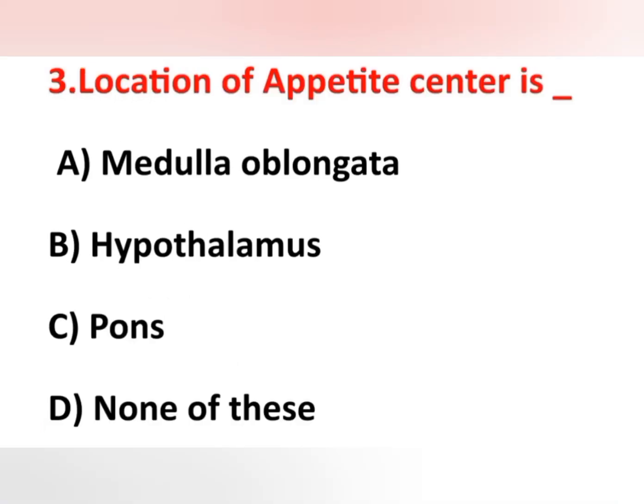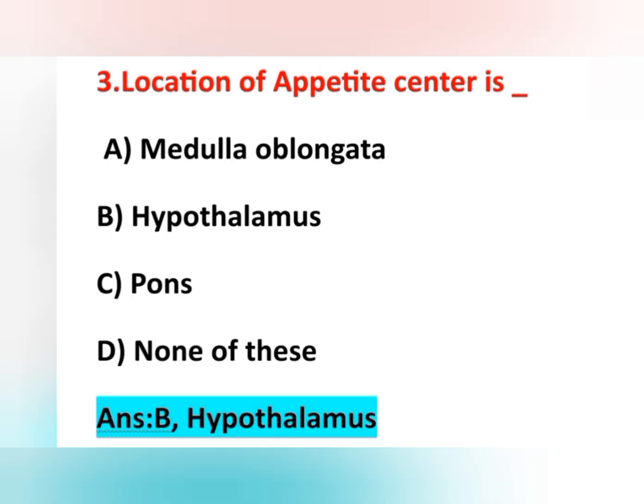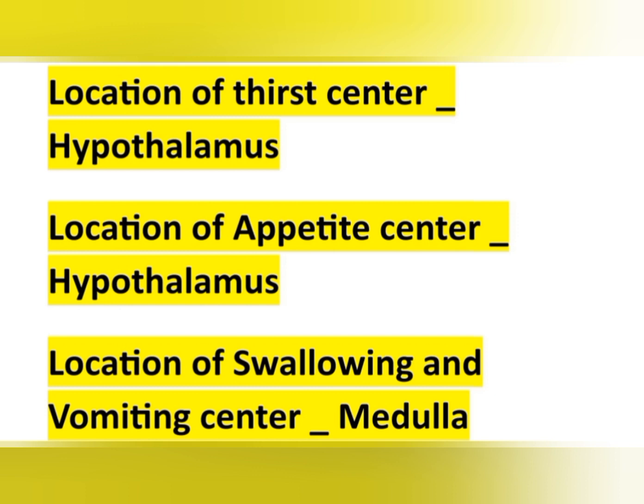Third question: location of appetite center is? Options are: option A, medulla oblongata; option B, hypothalamus; option C, pons; option D, none of these. The correct answer is option B, hypothalamus. The appetite center is located in the hypothalamus. The location of the thirst center is also hypothalamus. The swallowing and vomiting center is located in the medulla oblongata.